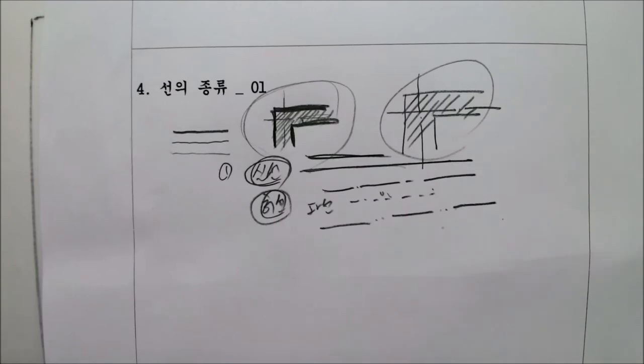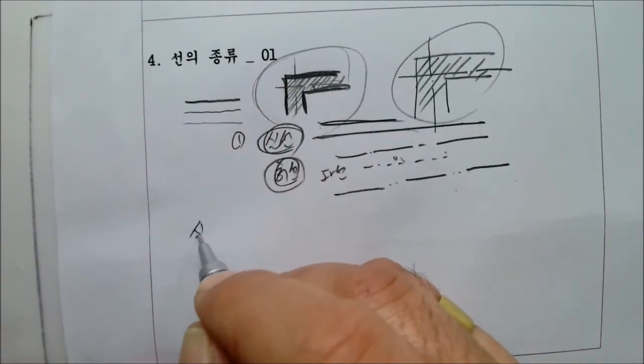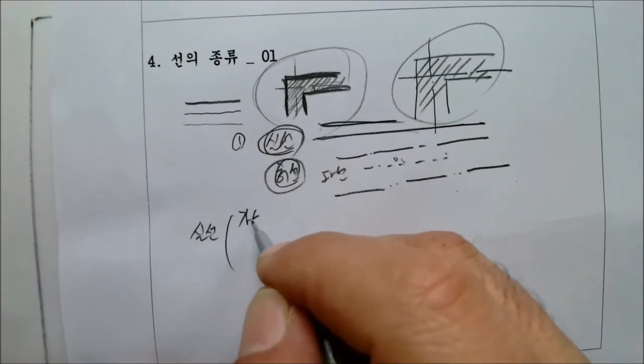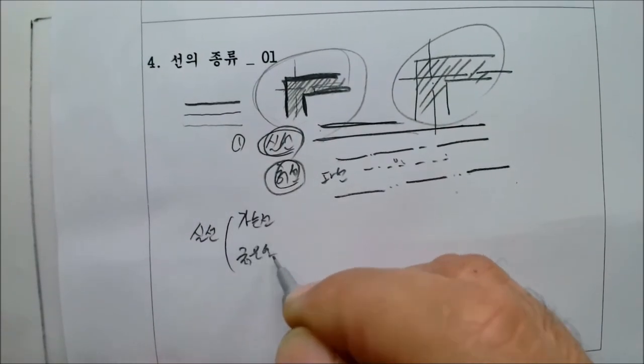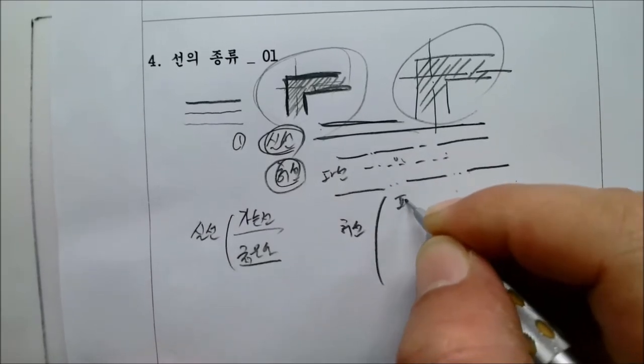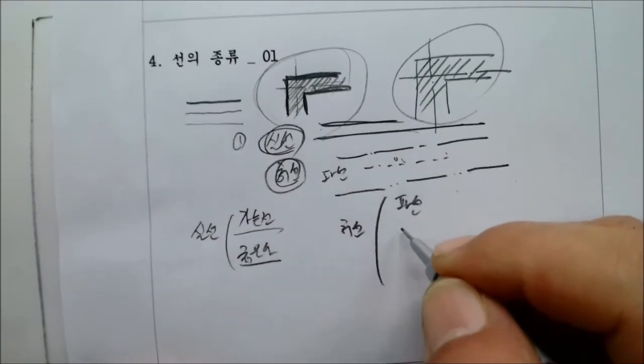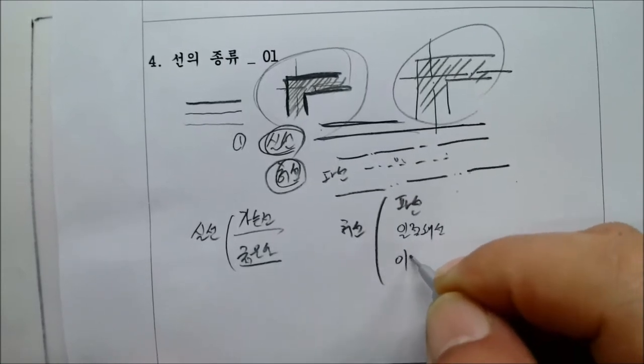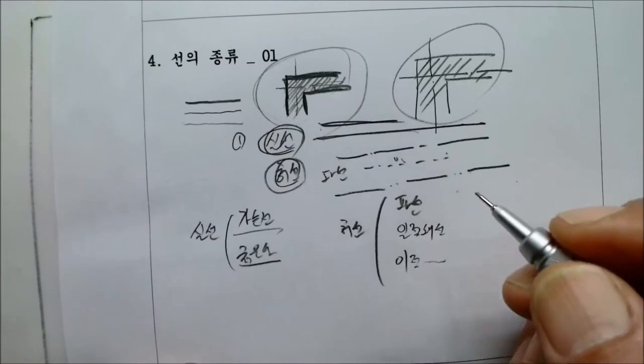자 다시 정리하겠습니다. 자 이렇게 봅시다. 먼저 실선은 가는선 굵은선 오케이 허선은 파선 그 다음에 1.3선 2.3선 이해하시겠나요?